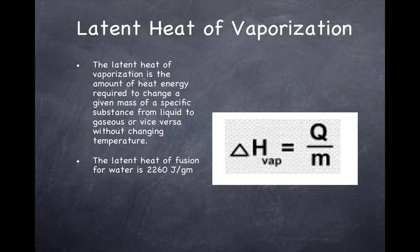If I had liquid water and I want to turn it to steam, I'd have to put in 2,260 joules per gram. But if I had steam, I would get out 2,260 joules per gram as it condensed from steam to water.